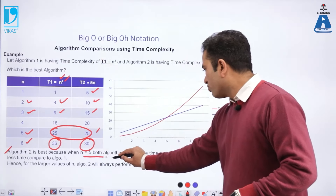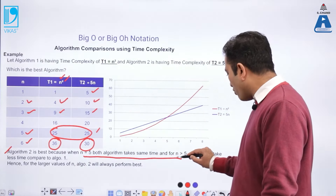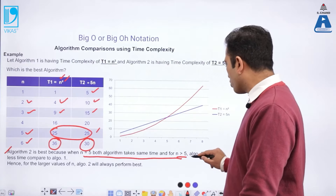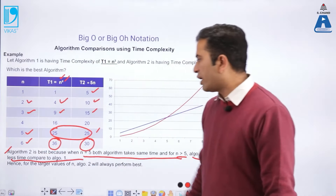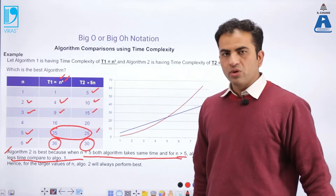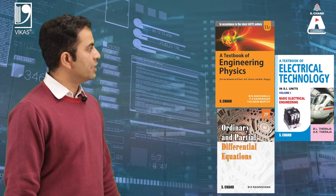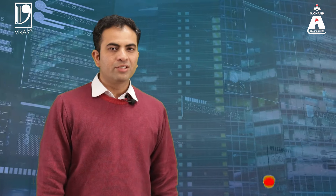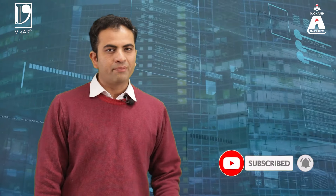When n = 5 both algorithms take the same time, and when n is greater than 5, Algorithm 2 takes less time compared to Algorithm 1. This is how we compare the complexities of various algorithms. This was a short introduction to time complexity — a very vast topic explained here at its basic and fundamental level. I recommend engineering books from S.Chan publishing. If you liked the video, please like, subscribe, share, and press the bell icon.